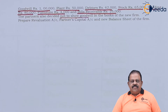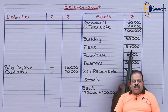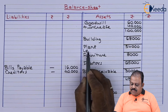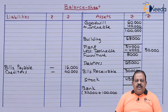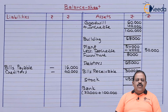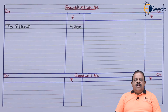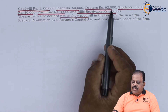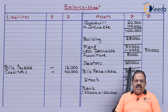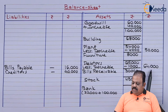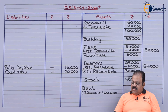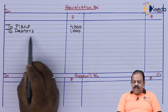Plant revalued at 50,000. Book value of plant is 54,000, so it will be decreased by 4,000; revised value is 50,000. Revaluation account debit to plant 4,000. Next, debtors revalued at 62,000. Book value of debtors is 65,000, so decreased by 3,000. Revaluation account debit to debtors 3,000.